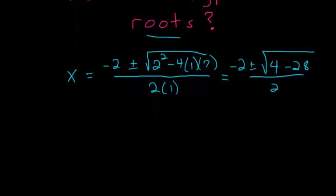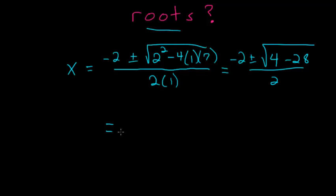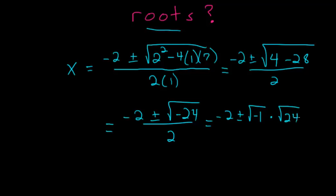And then 4 minus 28 is equal to negative 24 so we have minus 2 plus or minus the square root of negative 24 all divided by 2 and with negative 24 we can factor out the square root of negative 1 so this is multiplied by the square root of negative 1.